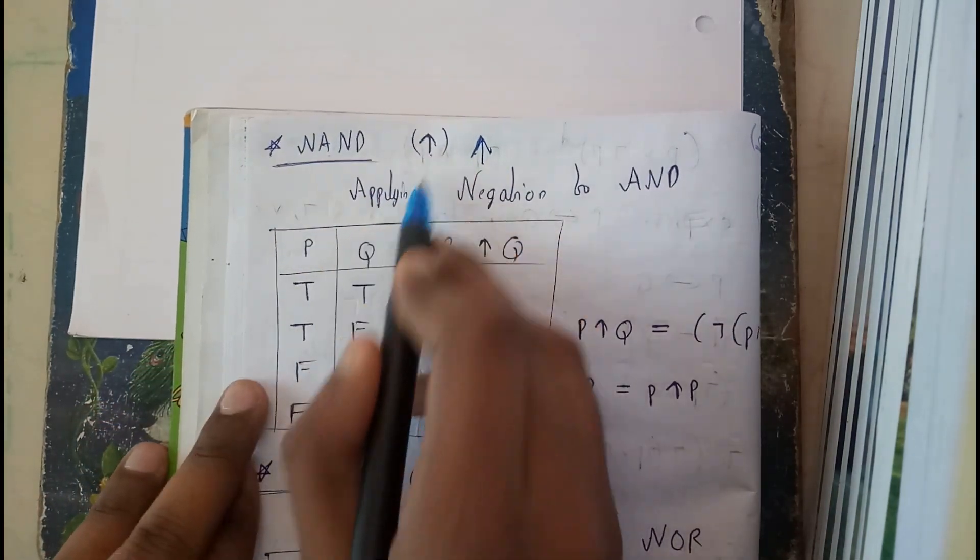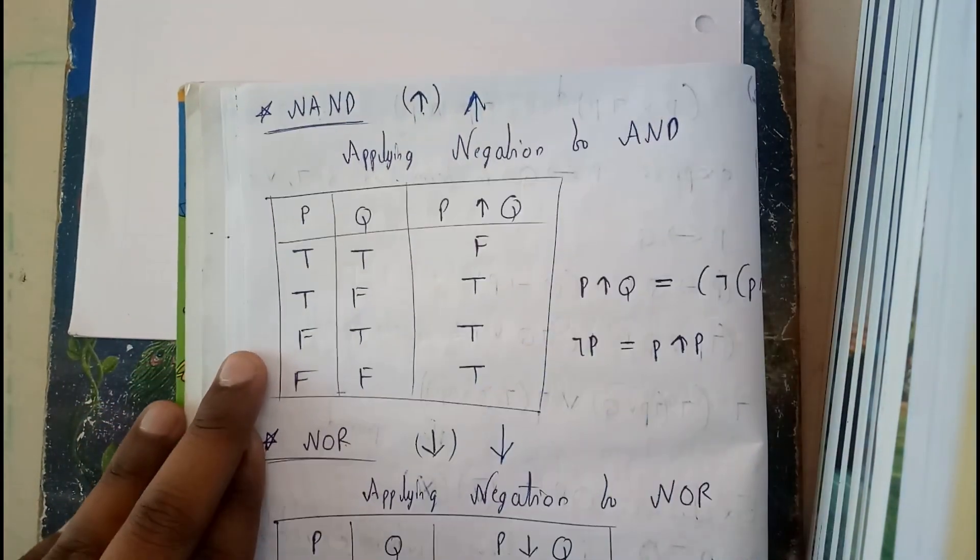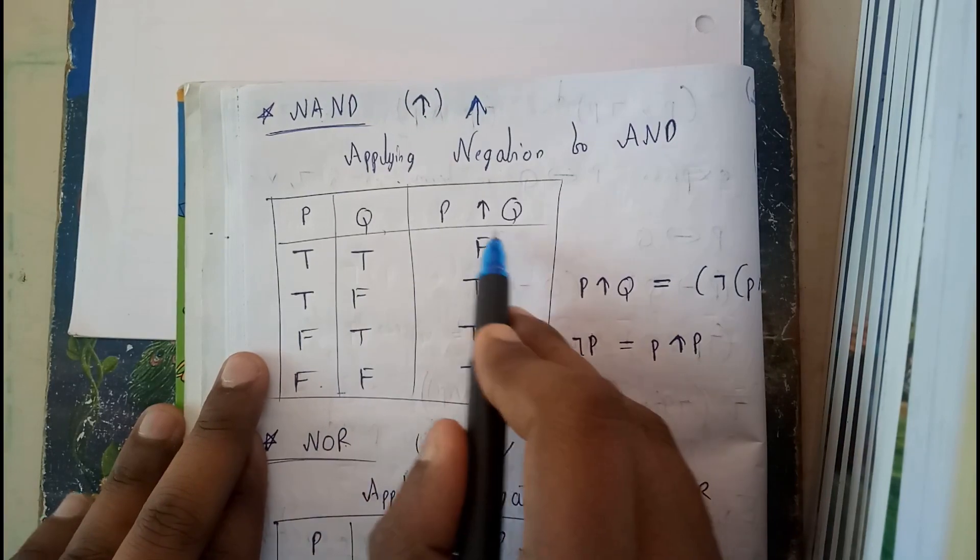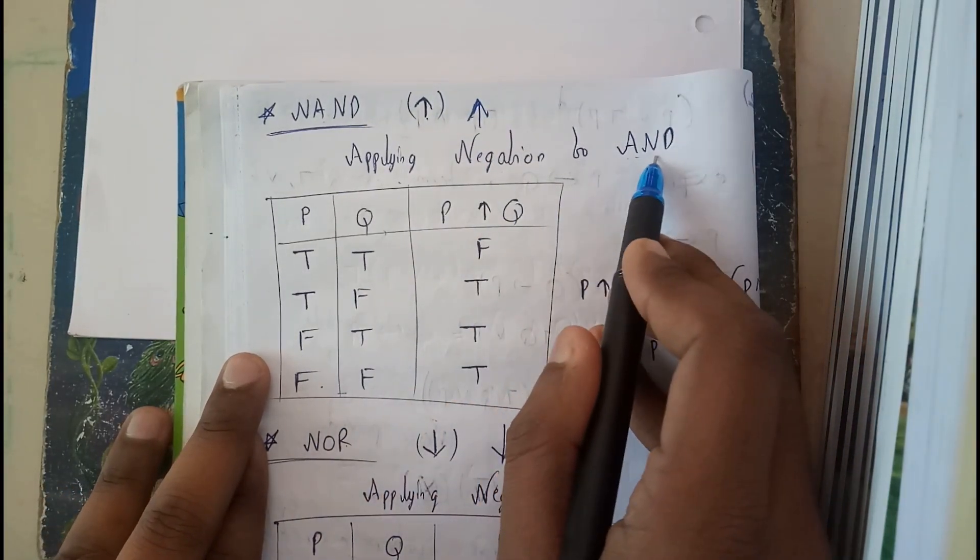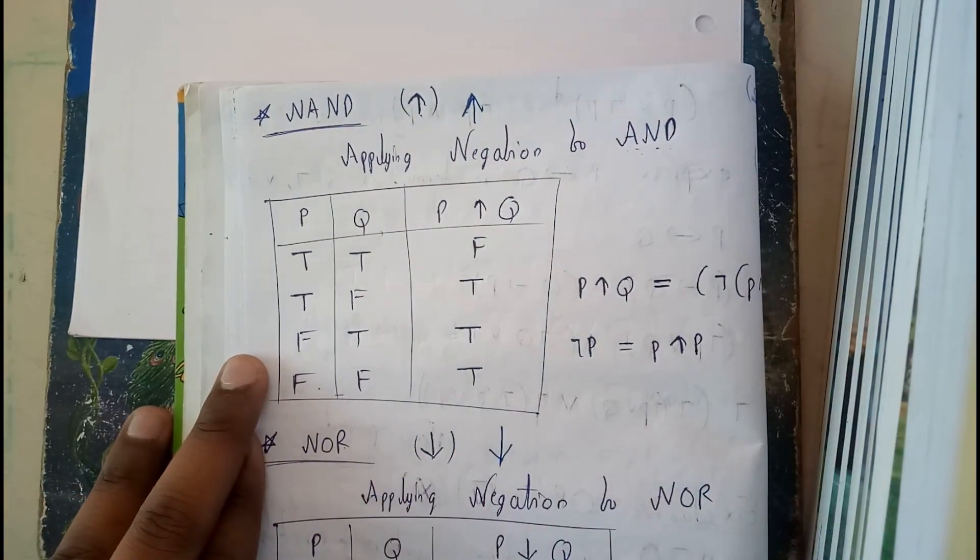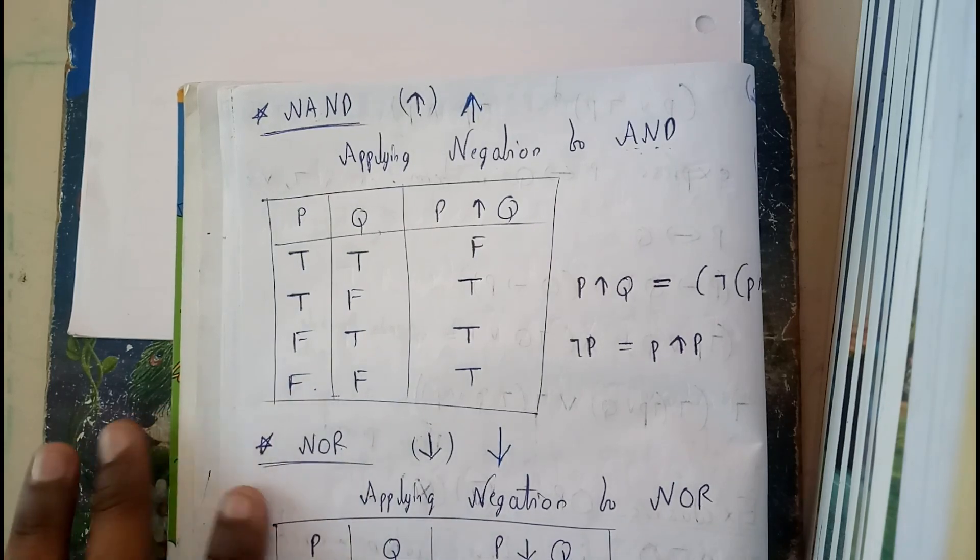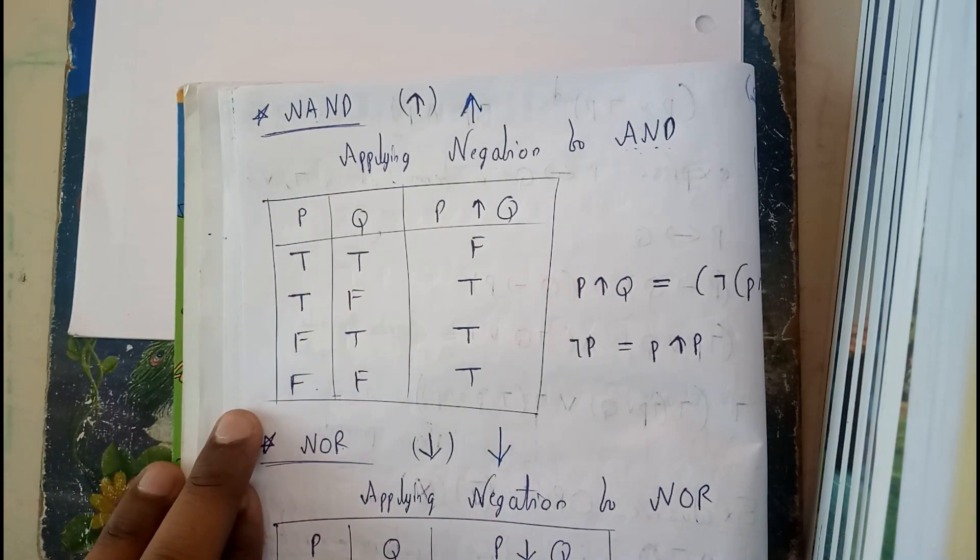NAND symbol is like this, applying negation to AND. Write the same table, just for AND you apply negation. In AND, if any one of them is false, then the result is false. So here if any one of them is false, then the result is true.